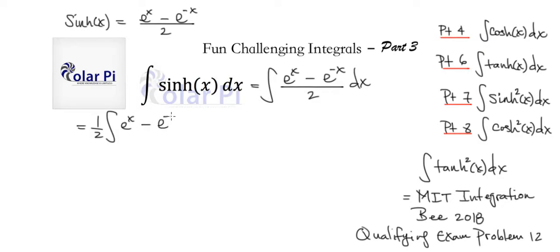And then this we can in turn write as 1/2, and we can separate it into two integrals if we so chose, and I'm gonna choose to do that. So e to the x dx and then minus 1/2 and then integral of e to the negative x dx.